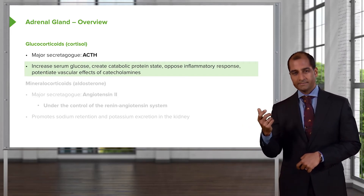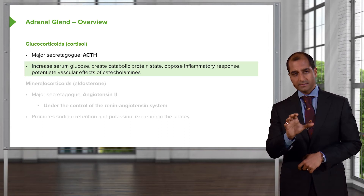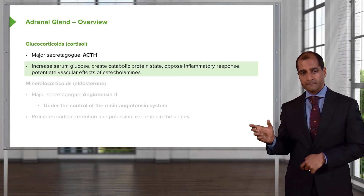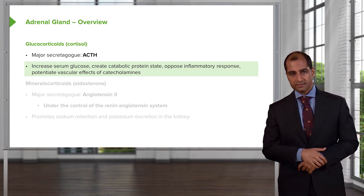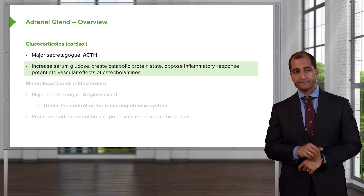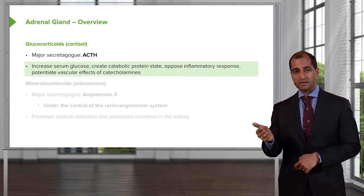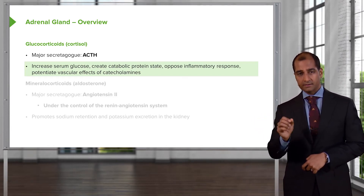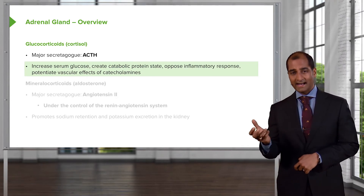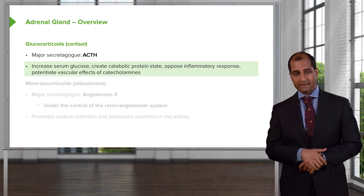Cortisol breaks down protein to provide substrates for gluconeogenesis. It also opposes the inflammatory response. Steroids inhibit phospholipase A2 in the arachidonic acid pathway. Therefore, you will not have your prostaglandins for inflammation — it is anti-inflammatory.